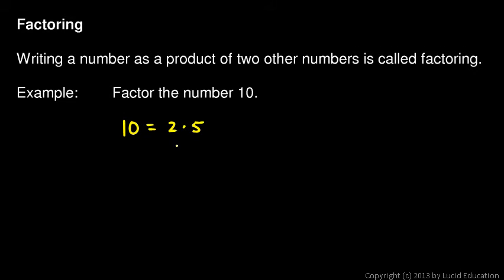Think of factoring as the reverse process of multiplication. Instead of saying 2 times 5 equals 10, we're starting with the 10 and finding two numbers that multiply to give us 10. You can think of it as unmultiplying the 10. So 10 is 2 times 5.